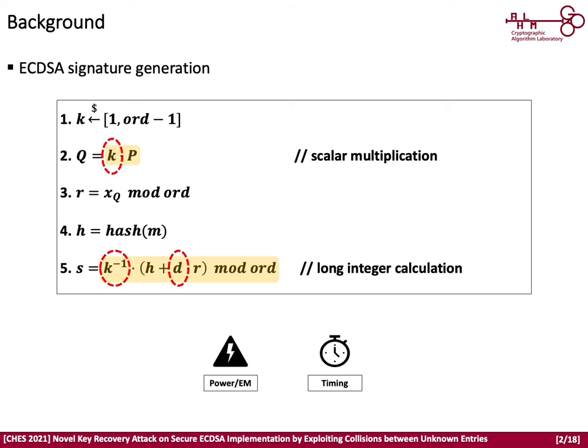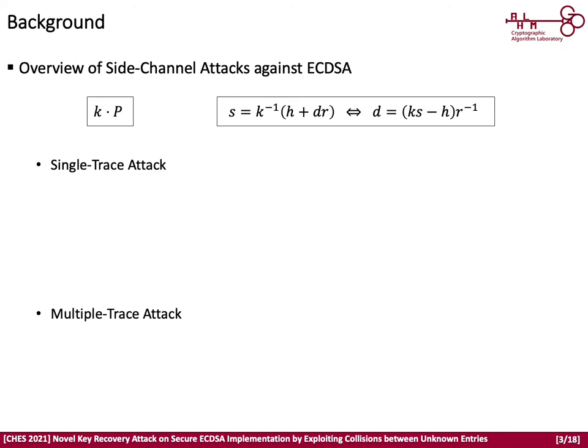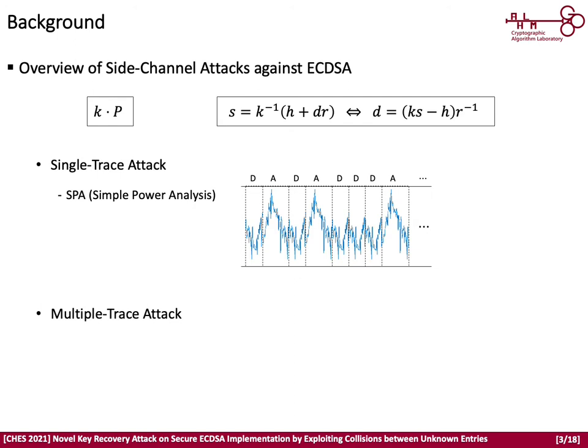Side-channel attackers can recover secrets from such leakages. Side-channel analysis is divided into single-trace attacks and multiple-trace attacks depending on the required number of traces. Here is a power consumption trace of scalar multiplication as a representative example of SPA. Since this trace has two distinguishable patterns representing point doubling and point addition, an attacker can identify the secret immediately by identifying such patterns.